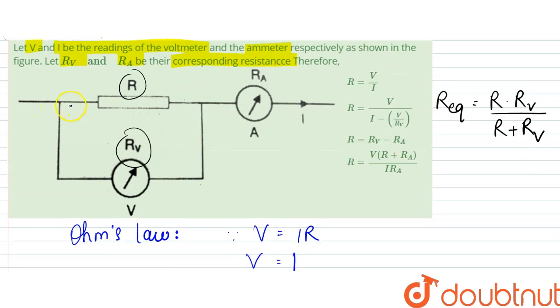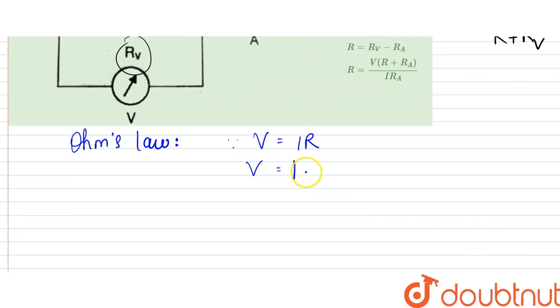Since the current passing through this would be the R_equivalent and R_A would be same. So that would be I into R_equivalent, that is R into R_V by R plus R_V.